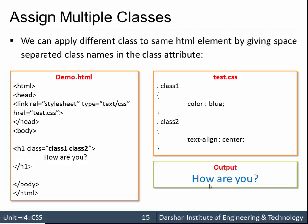So the output would be its color also changes as well as its text align property also changes to center. So this is how we can specify multiple classes to a single element.